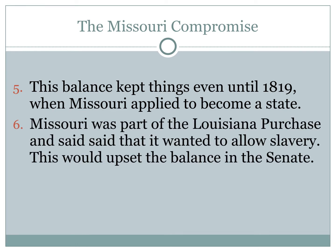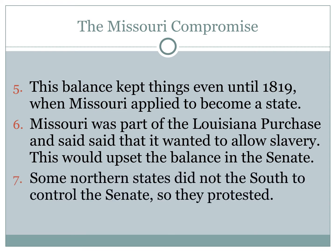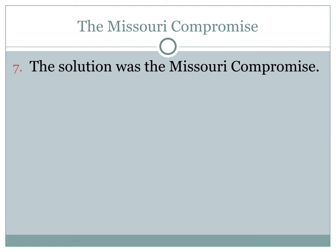Missouri was part of the Louisiana Purchase. When they applied to become a state, they said they wanted to allow slavery. This would shift the balance of power in the Senate from being equal to favoring the South. So some Northern states did not want the South to control the Senate, and they protested. This created a conflict over a major issue, and the solution that was reached was the Missouri Compromise.